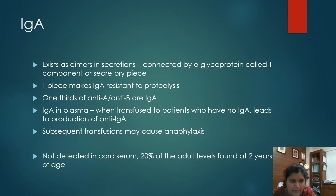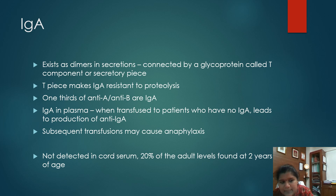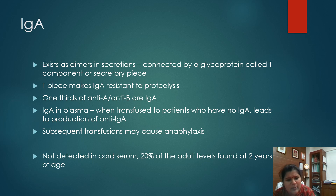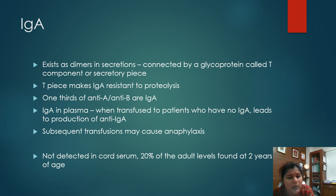Coming to IgA — IgA usually exists as dimers in secretions. These dimers form with the help of a glycoprotein called the T component or secretory piece. This T piece makes IgA resistant to proteolysis, that is breakdown. One-third of the anti-A and anti-B antibodies in the ABO system are IgA. The IgA in plasma, when transfused to patients who do not have IgA, will lead to production of anti-IgA.